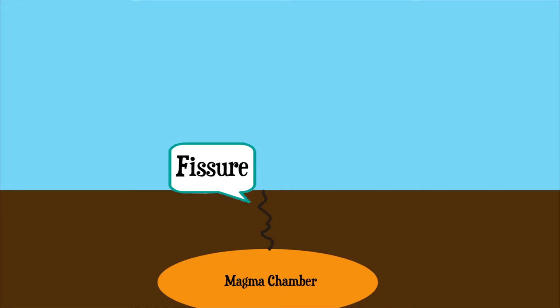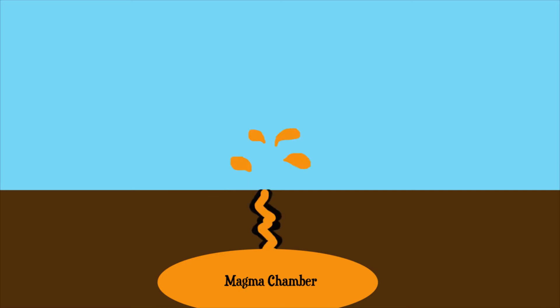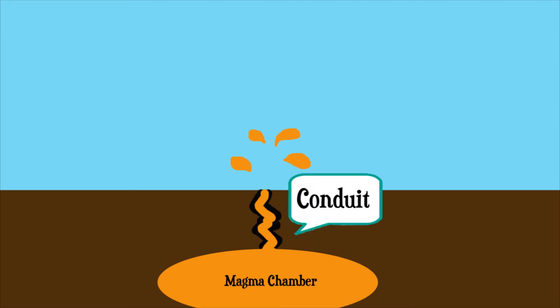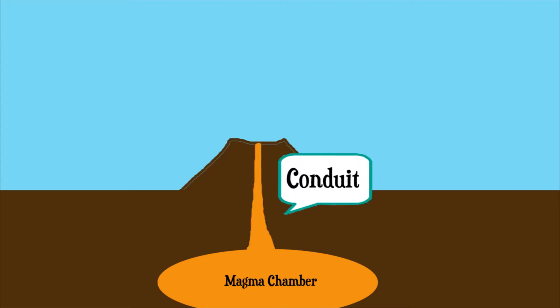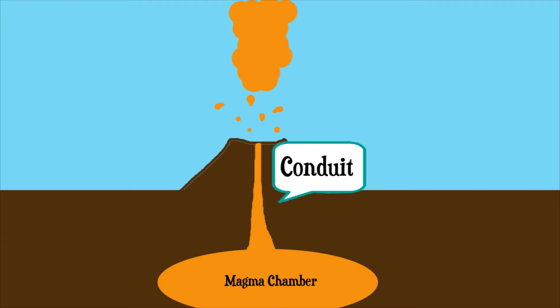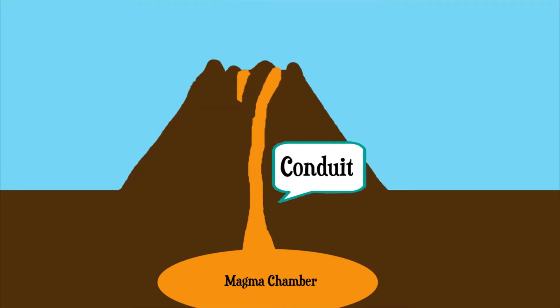A volcano begins as a simple crack or fissure in the crust. This crack then extrudes magma, and since things always follow the path of least resistance, this already established crack becomes what we know as a conduit. As magma continues to erupt from the fissure, it slowly builds up the cone shape that we see as a volcano.